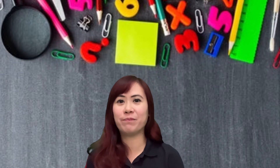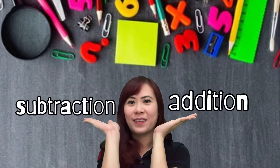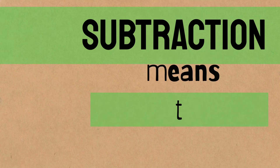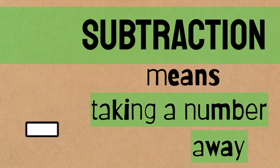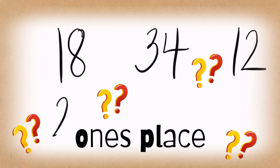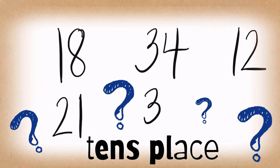Addition means putting numbers together and we always use the plus sign. On the other hand, subtraction means we are taking a number away and we usually see the minus sign. When you are writing numbers, please remember that it is very important to know the place value of each digit — does it belong to the ones place or does it belong to the tens place?